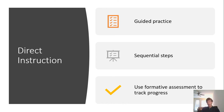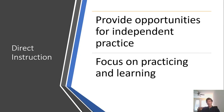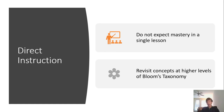Direct instruction is tied again to guided practice, sequential and carefully planned steps. You need to use formative assessment to track progress so your feedback is specific. Make sure you provide opportunities for independent practice in addition to guided practice, focusing on very specific types of practice. Do not expect mastery to occur in a single lesson, and make sure you revisit concepts to build toward higher levels of Bloom's taxonomy. There's nothing wrong with memorization — you have to memorize something to reach the higher levels — but eventually make sure you get to analysis, synthesis, and so on.